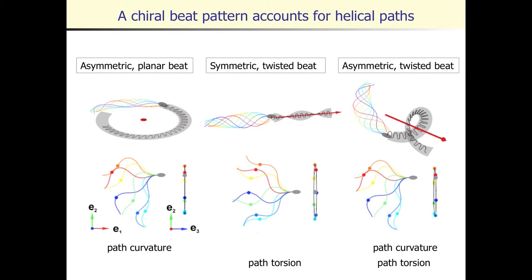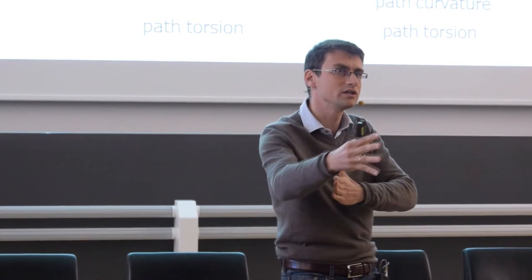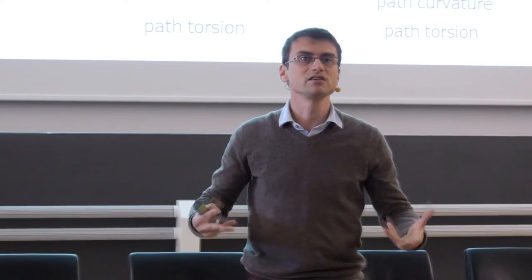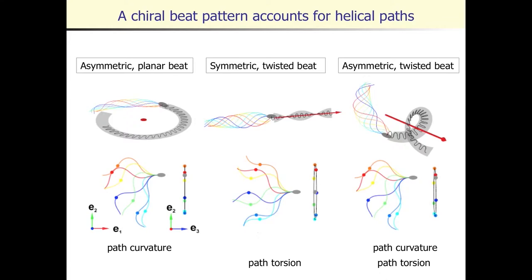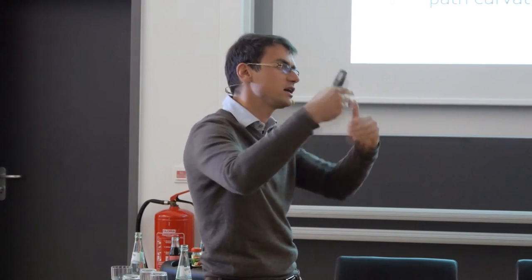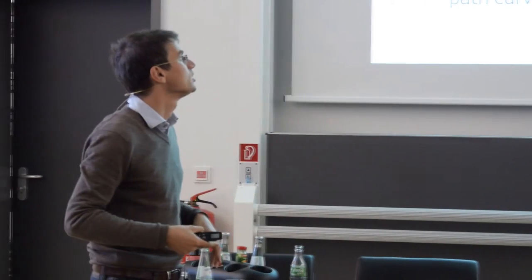For sea urchin sperm, you have both: an in-plane asymmetry of the flagellar beat and a nonplanar flagellar beat. This gives a cell that swims in a circle in a plane while the plane simultaneously rotates, producing a helical swimming path. We can do the hydrodynamics and this beat pattern was reverse-engineered to exactly match the helical parameters measured in experiments, allowing us to indirectly infer the shape of the 3D flagellar beat.